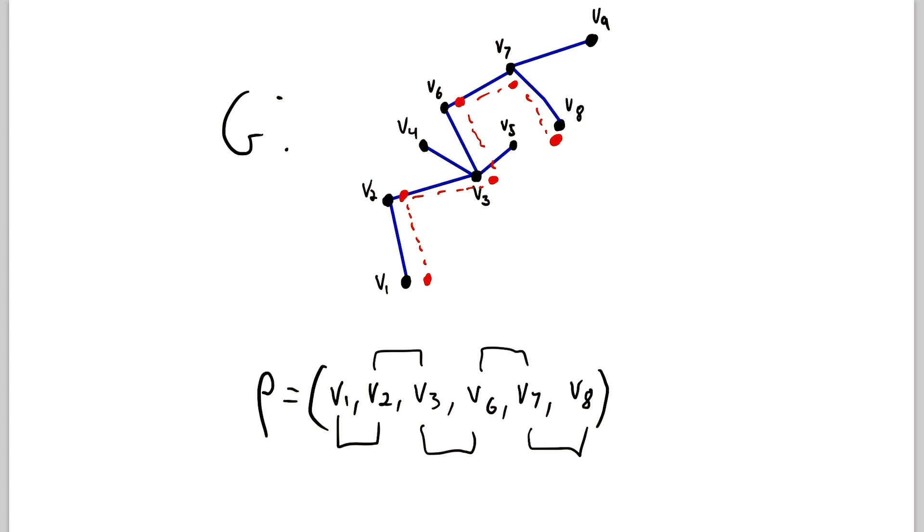Remember that in a walk, we could traverse both edges and vertices multiple times. In a trail, we could traverse vertices multiple times, but not edges. In a path, we are not allowed to traverse vertices multiple times, which means that we're also not allowed to traverse edges multiple times.